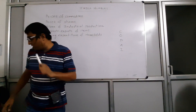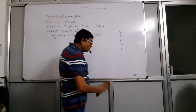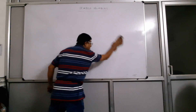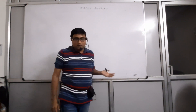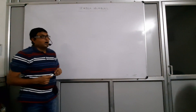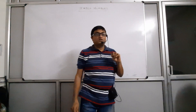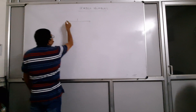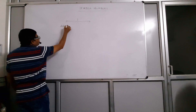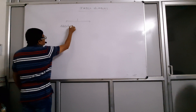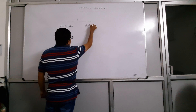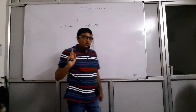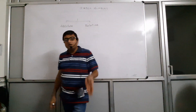So in index numbers, we are going to learn the study of changes — the study of changes of different variables. There are two methods of studying changes: first is absolute changes, and another is relative changes. Changes can be studied in an absolute manner or in a relative manner.